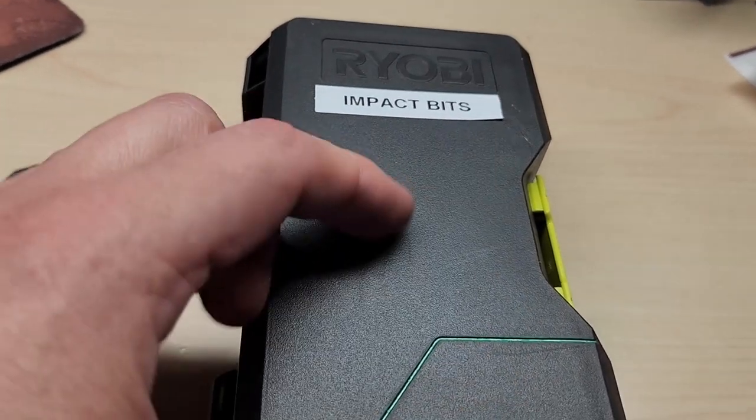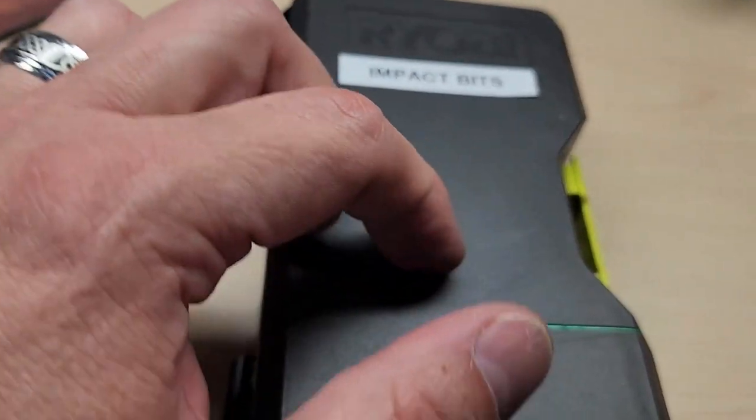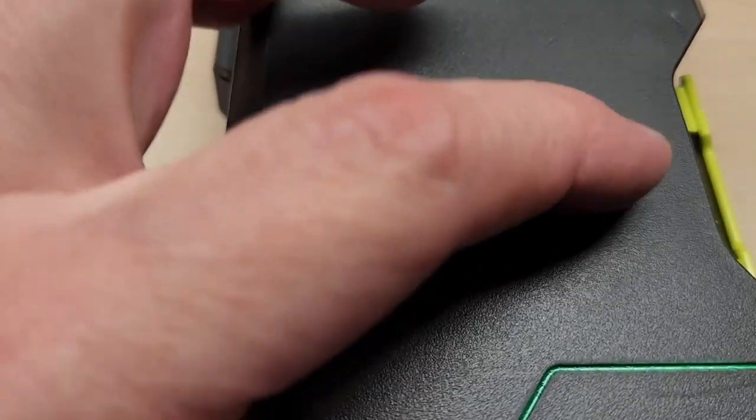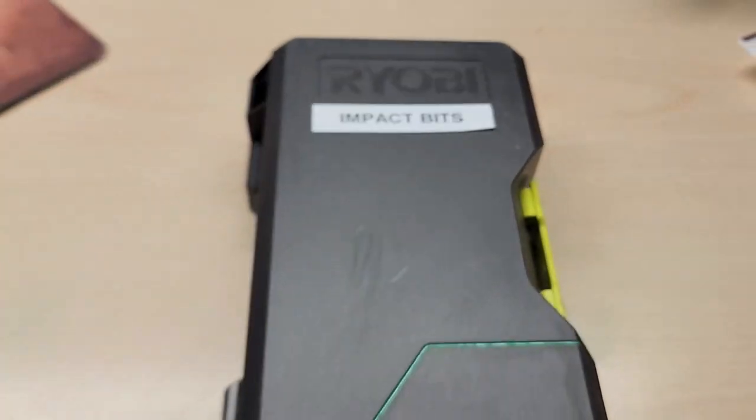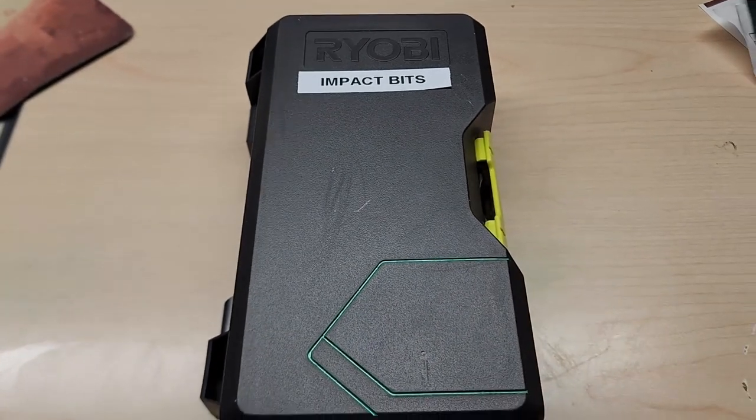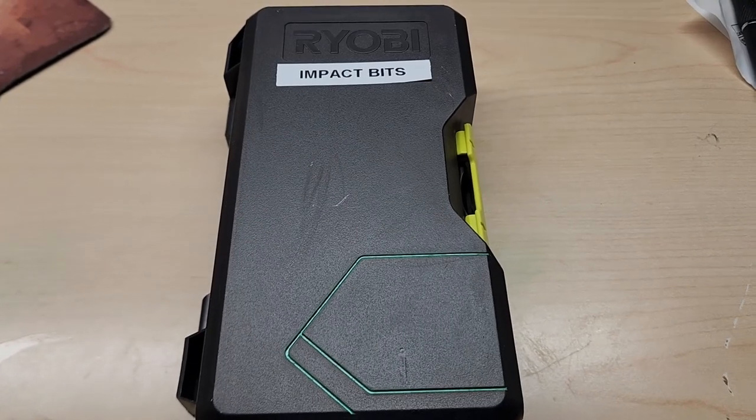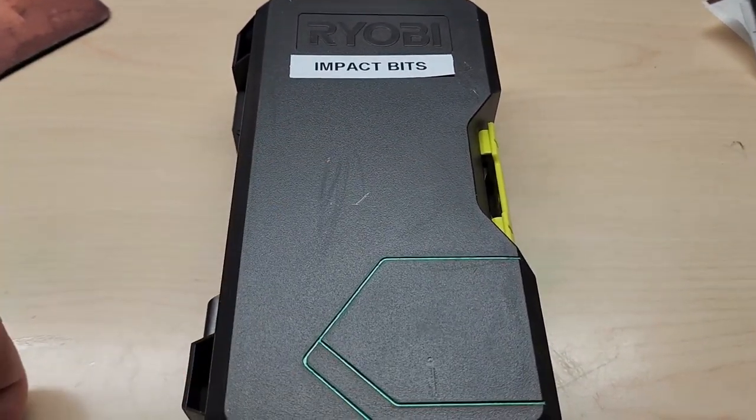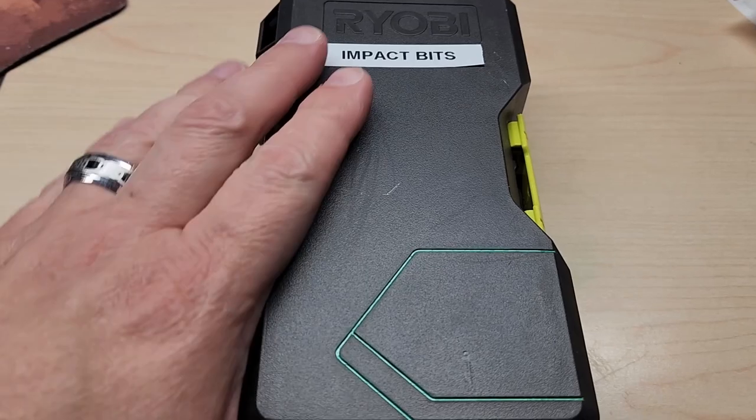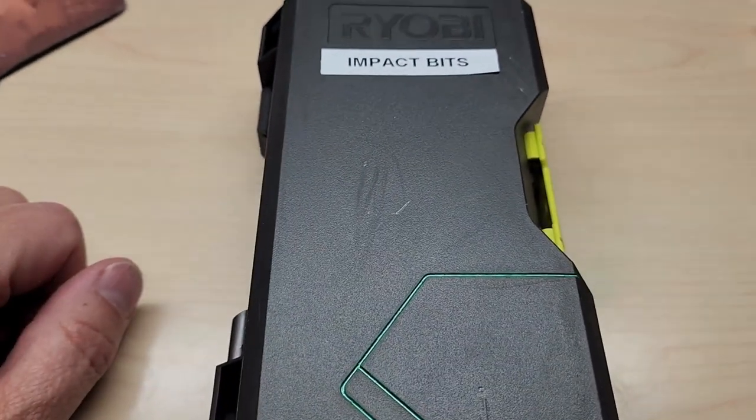But the case is kind of slick. That is a softer rubber. Look at that, I can scratch it with my fingernail. So it's not as sturdy as the Milwaukee or some of the harder plastic cases. I mean, that's not coming out. That's a permanent mark now. Cool.